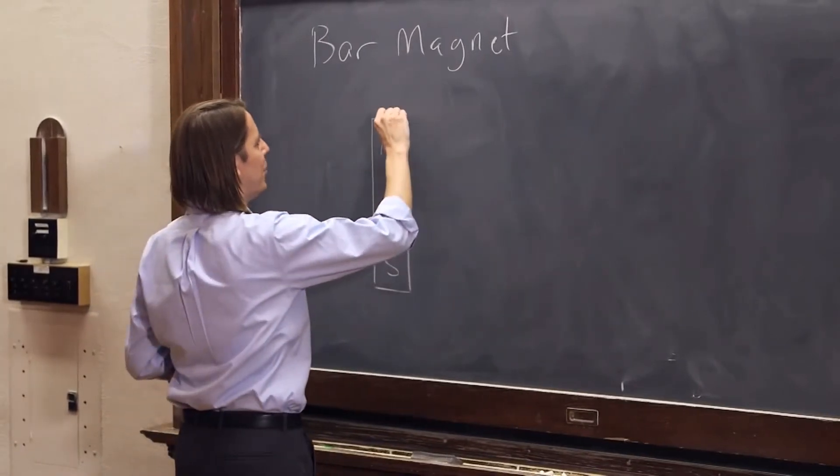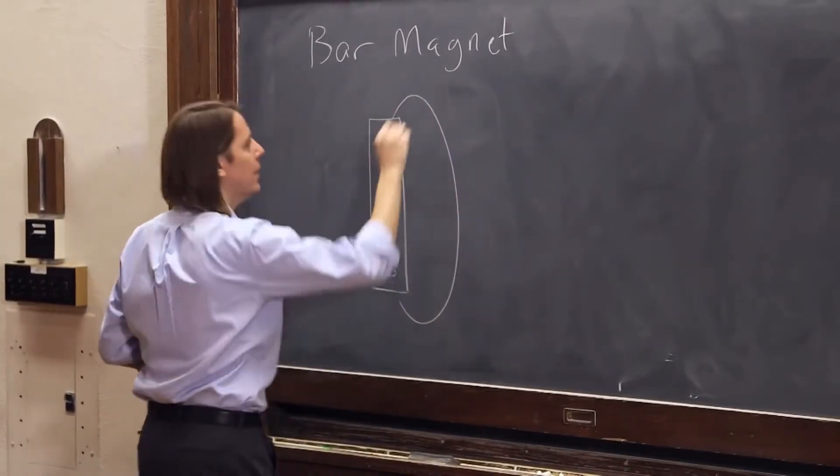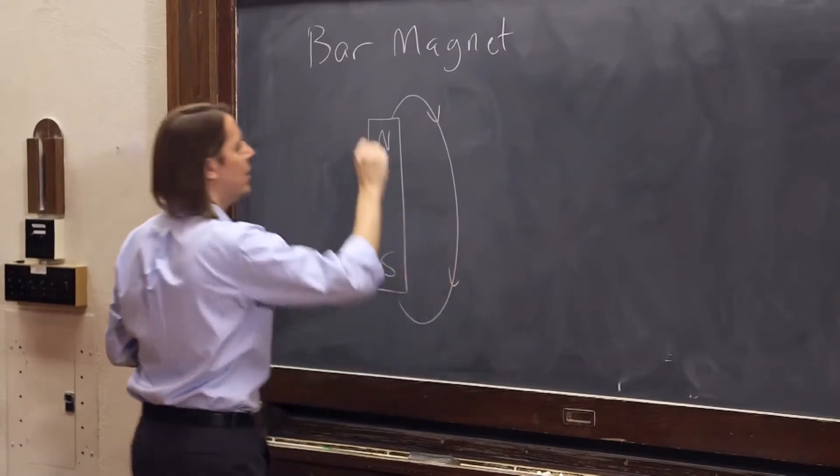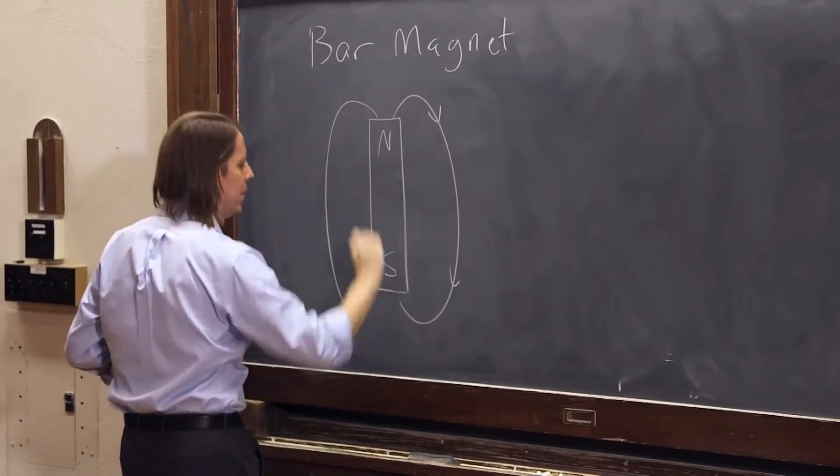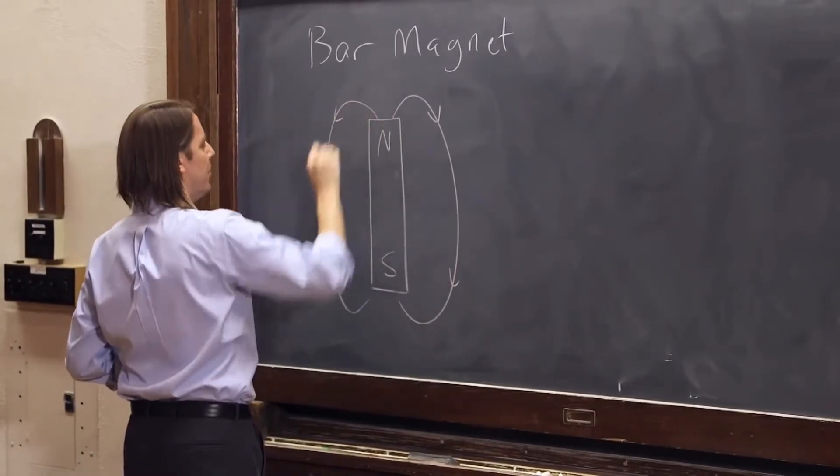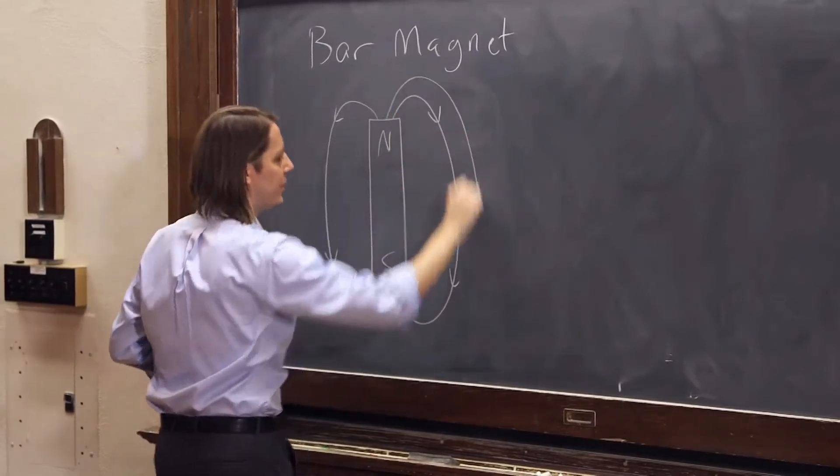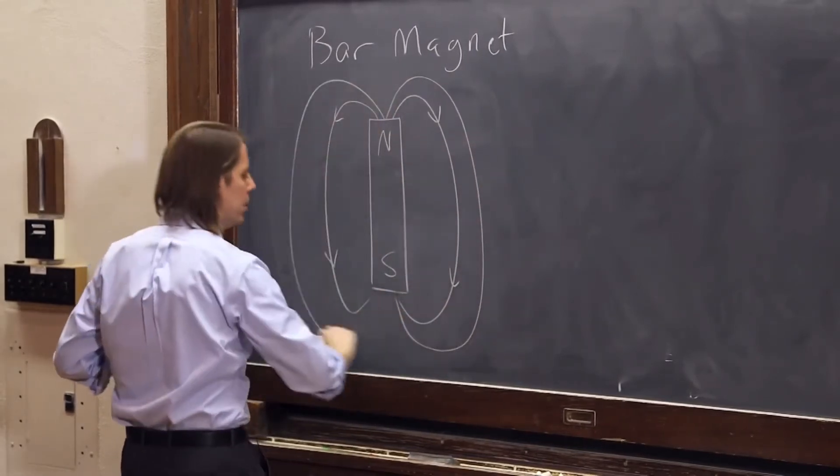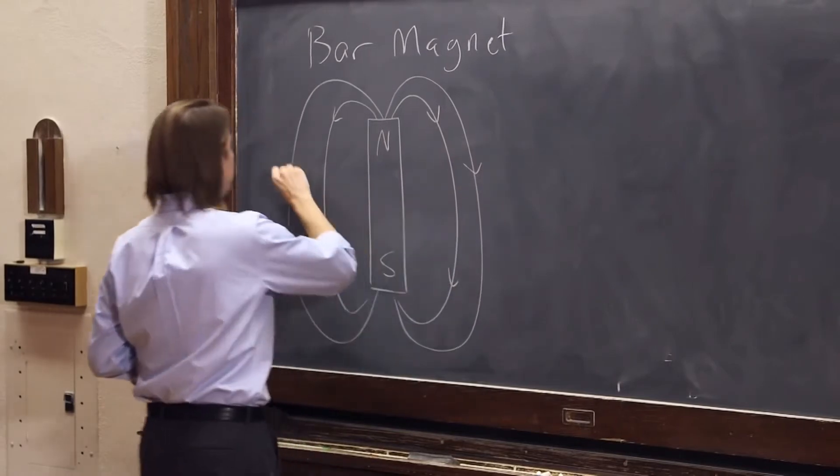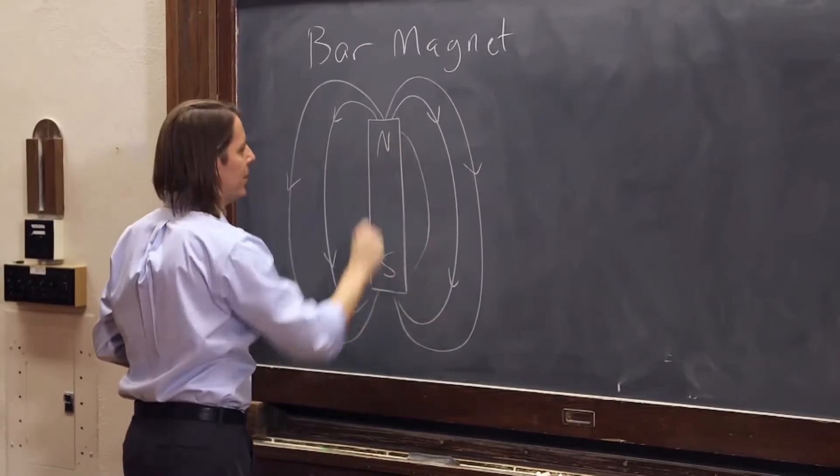The field lines coming out of a bar magnet kind of look like this, with the field lines emanating from the north and curving around to the south. And then this one kind of does like that also. And they're going in all three dimensions, some kind of like that.